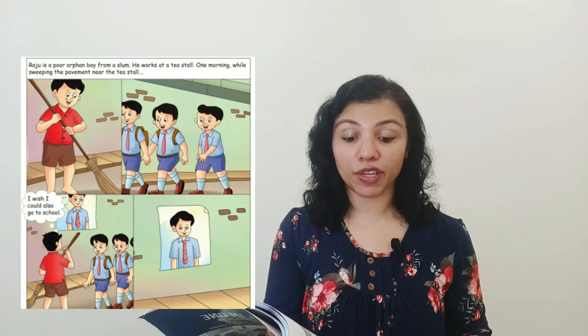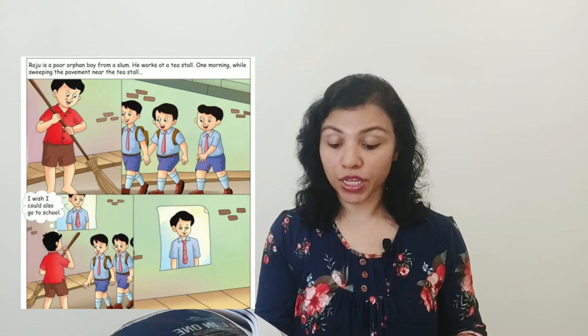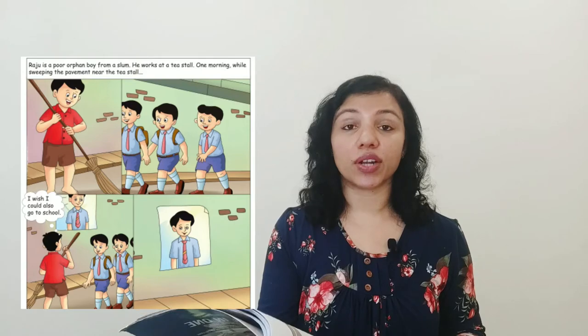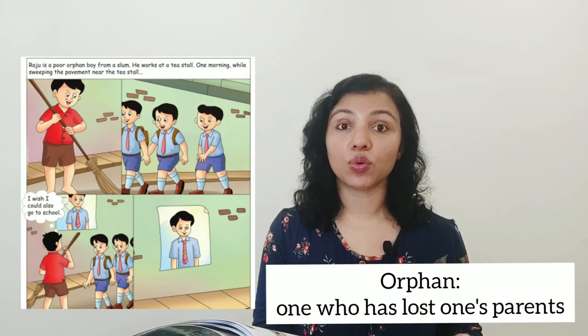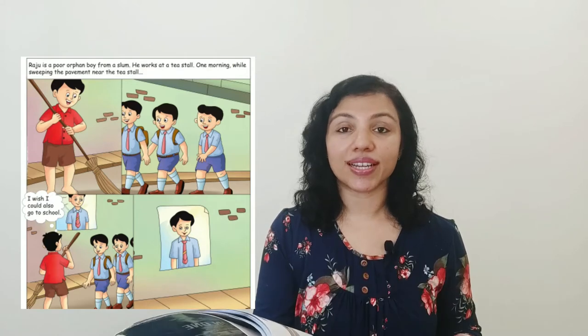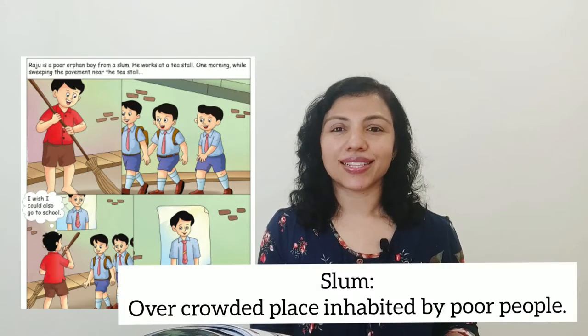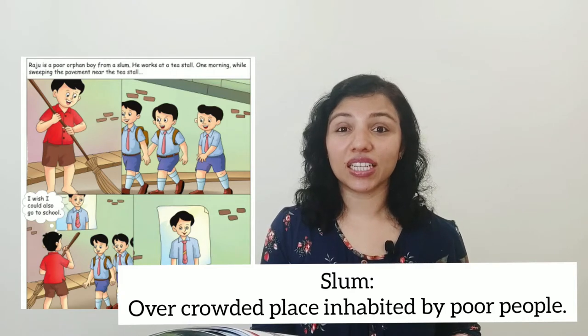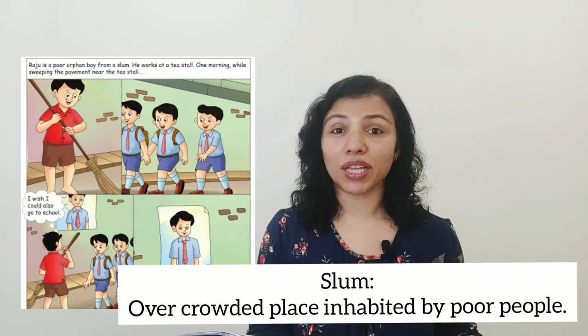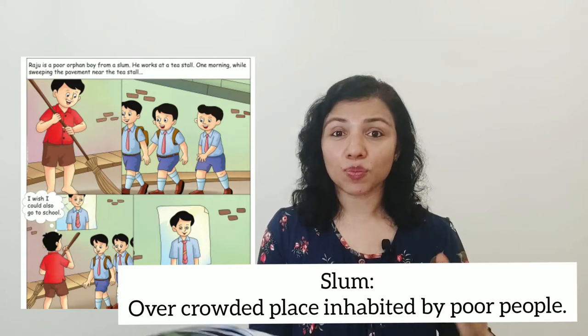Yes, a story can be presented in different ways, and this is one of them. Let's look at it. Raju is a poor orphan boy from a slum. He works at a tea stall. One morning while sweeping the pavement near the tea stall, he thinks: 'I wish I could also go to school.' That dialogue looks like bubbles — that's when the boy is thinking to himself. An orphan is a person who has lost both parents. A slum is a place where a lot of poor people live in small makeshift homes in a very small area.